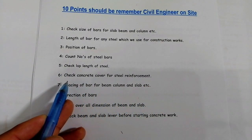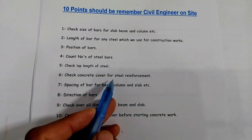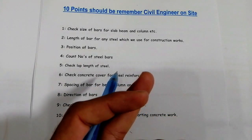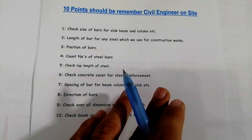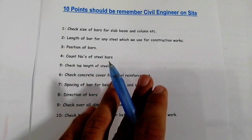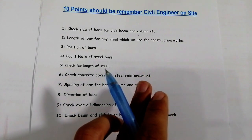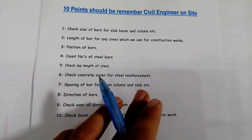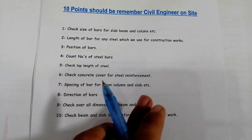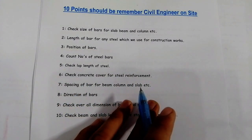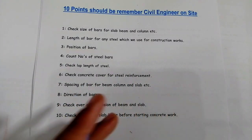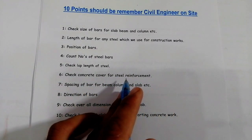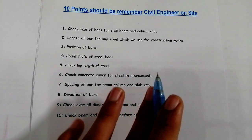The sixth point is: check the concrete cover for steel reinforcement. In column, beam, and slab, you should check the concrete cover according to the drawing, because we have different concrete cover requirements for different RCC structures.